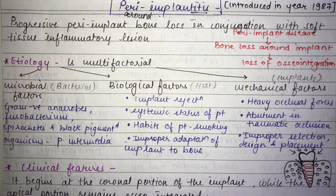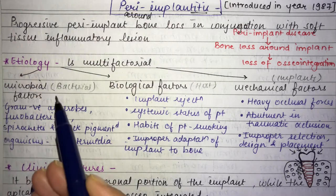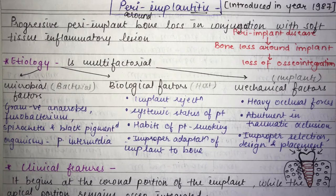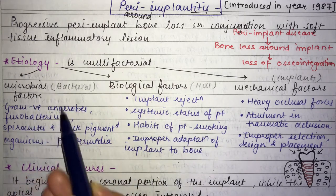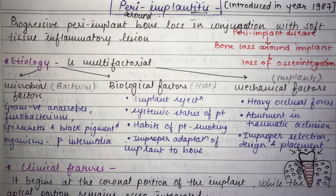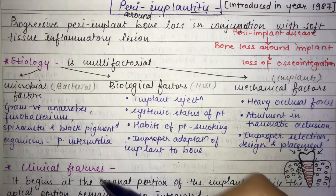The etiology of peri-implantitis is multifactorial, involving three categories: microbial factors, biological factors, and mechanical factors. The microbial factors are caused by bacteria — specifically gram-negative anaerobes, fusobacterium, spirochetes, and the black-pigmented organism prevotella intermedia.